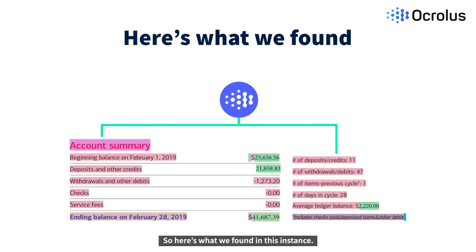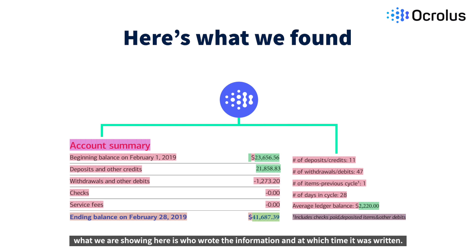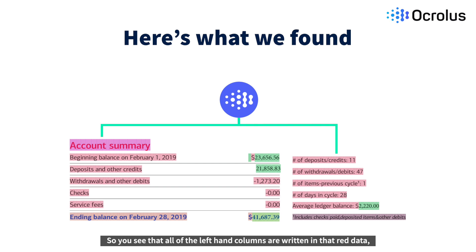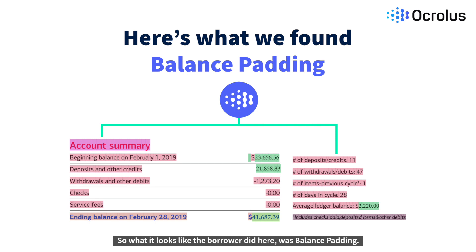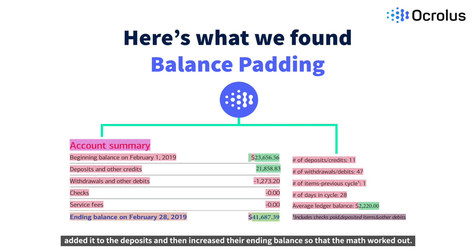So here's what we found in this instance. If you look at the green text versus the red text, what we're showing here is who wrote the information and at which time it was written. The red is indicating that the bank wrote the data — all of the left-hand columns are in red. The green data is what was written by someone outside of the banking institution. What the borrower did here was balance padding: they went in and added cash to their beginning balance, edited the deposits, and then increased their ending balance so that the math worked out.